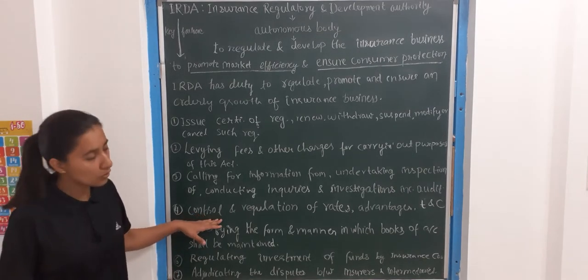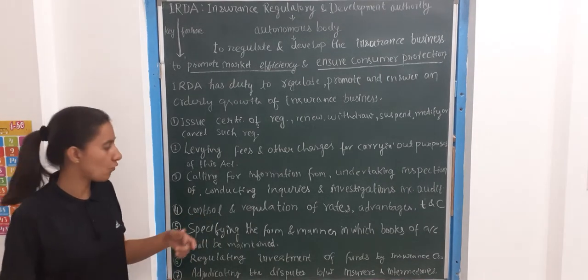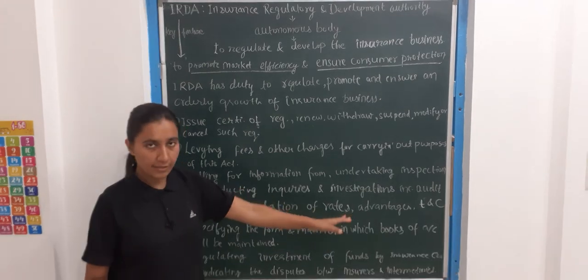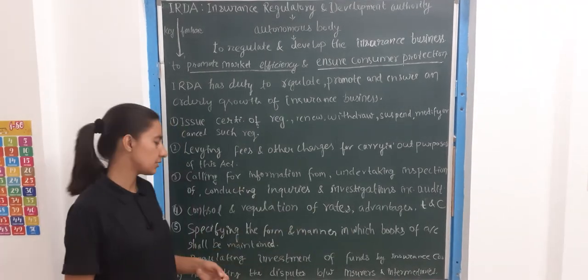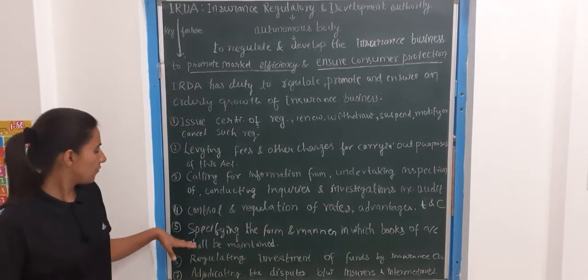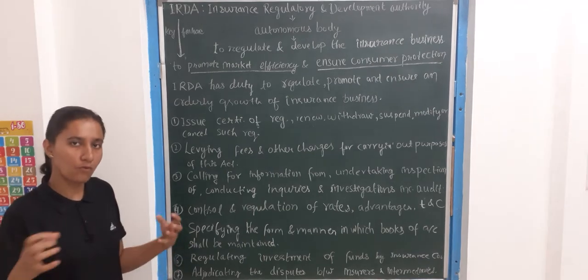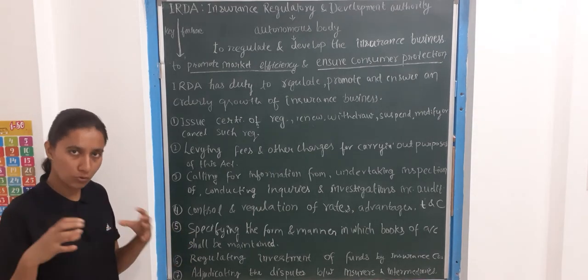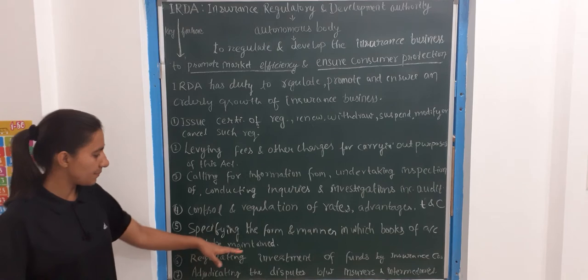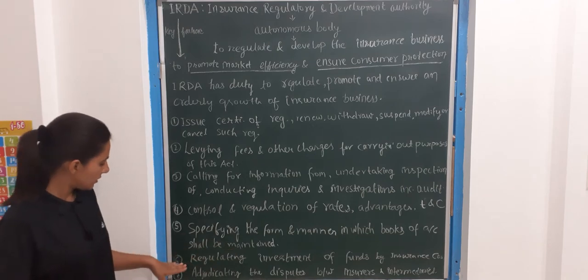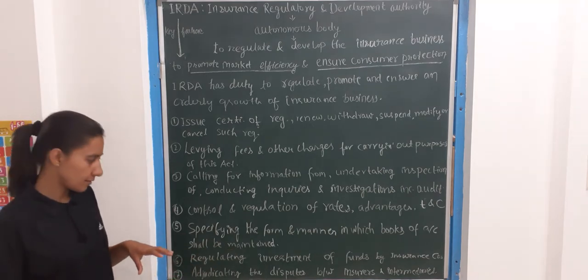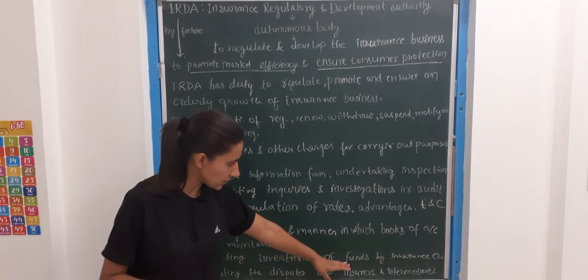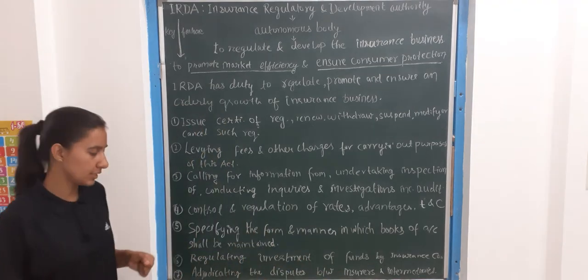The fourth one is control and regulation of rates, advantages, terms and conditions. The fifth one is specifying the form and manner in which the books of accounts shall be maintained. The sixth one is regulating the investment of funds by insurance companies.